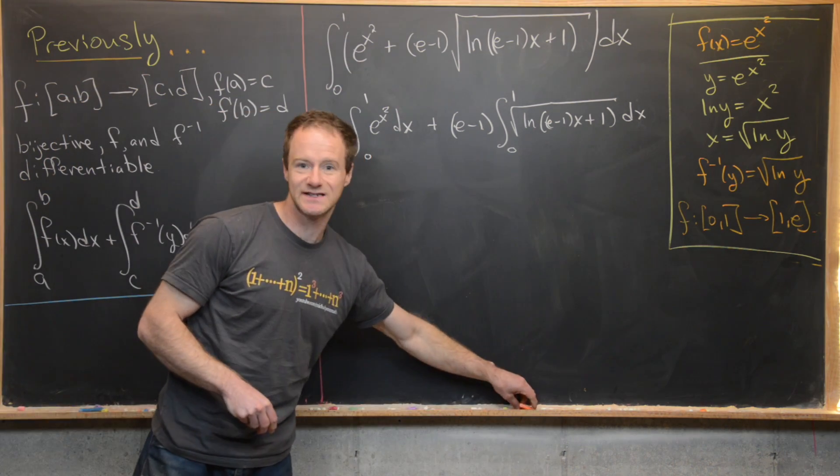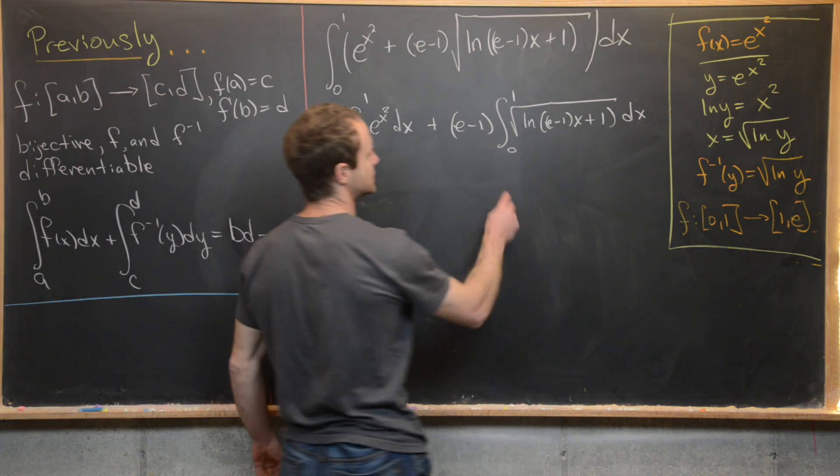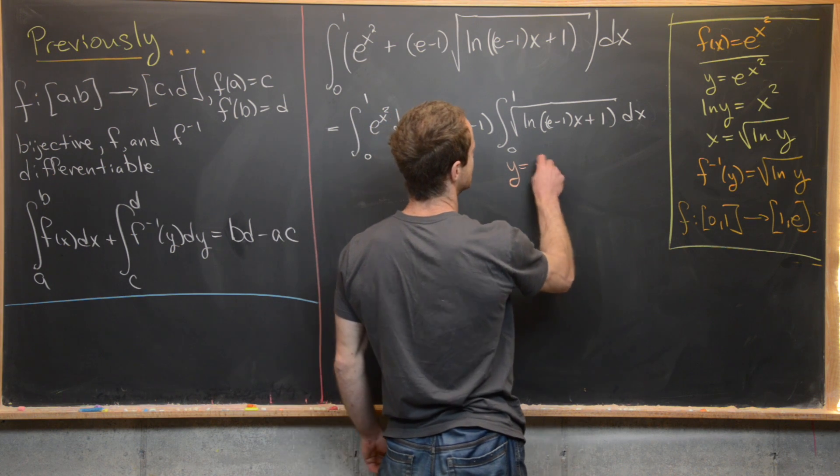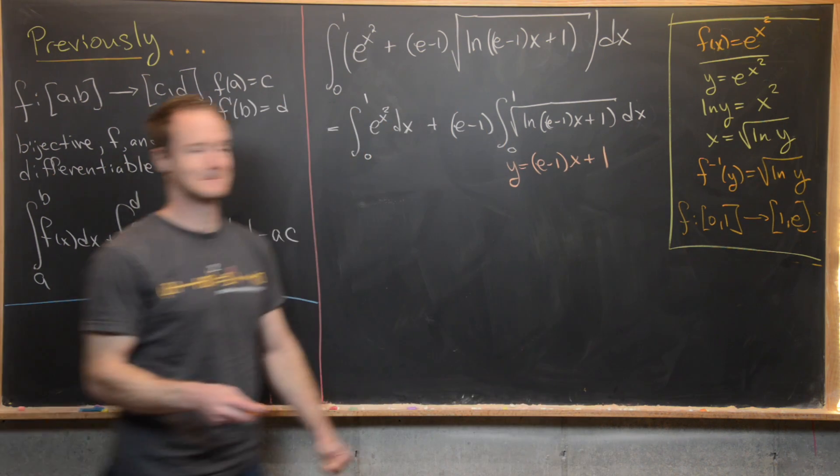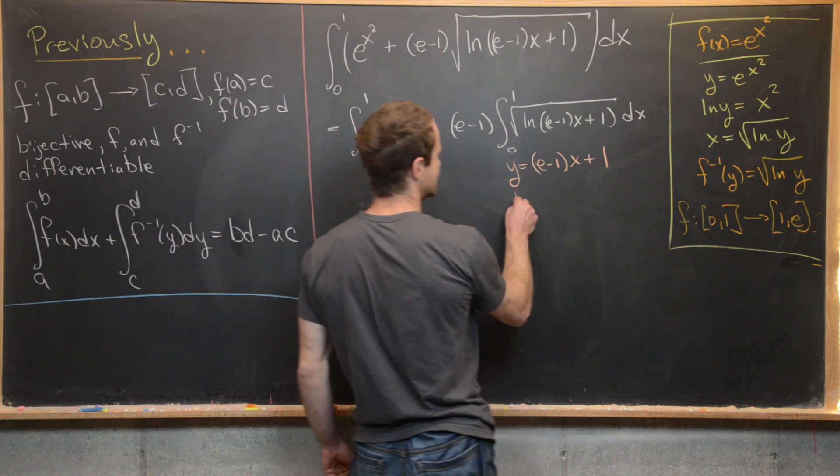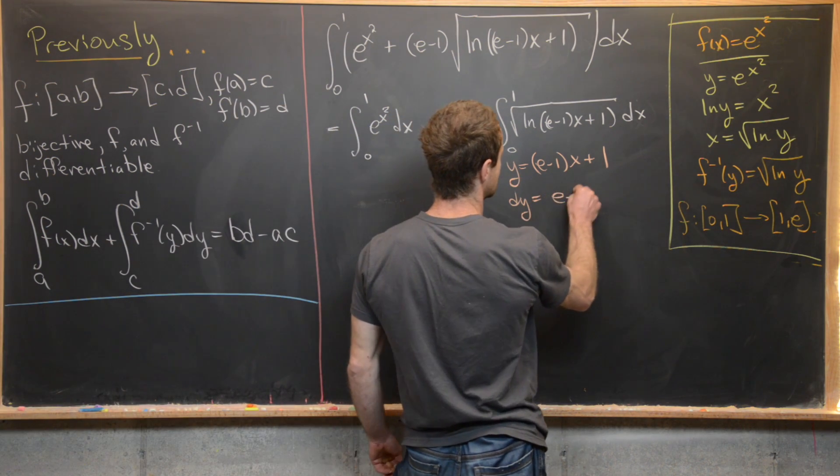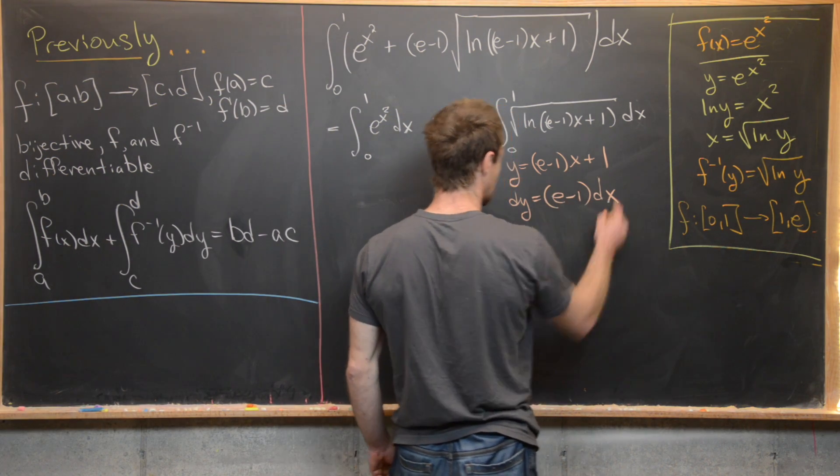And we can do that with a fairly simple substitution. So let's let y equal (e minus 1) times x plus 1. And notice that that means dy equals (e minus 1) times dx.